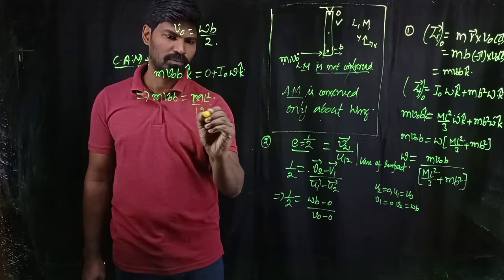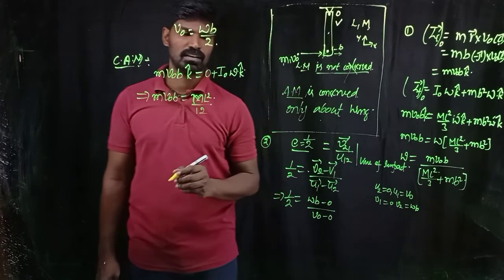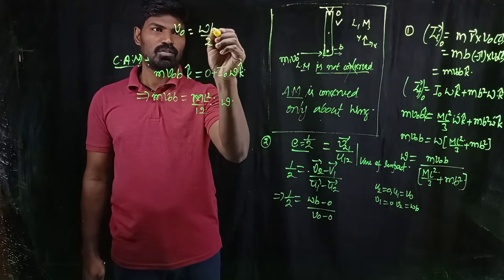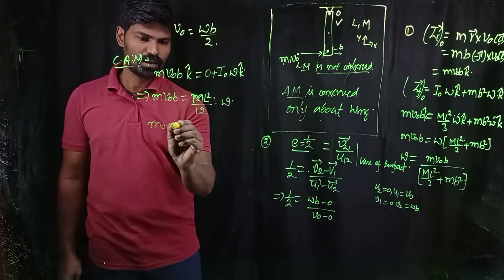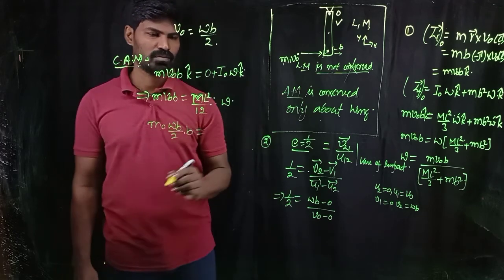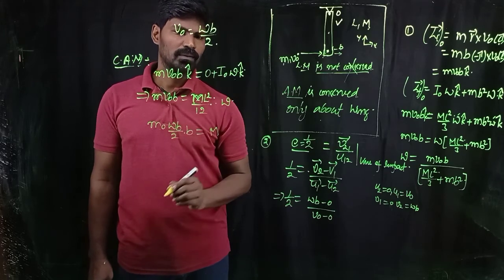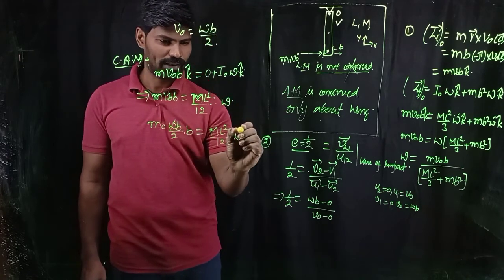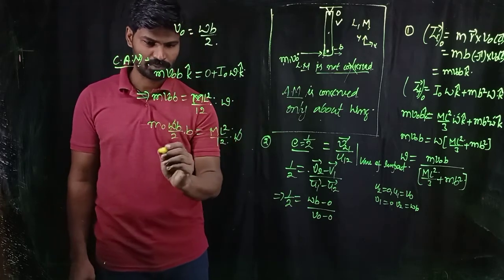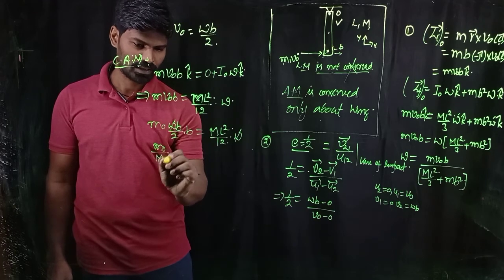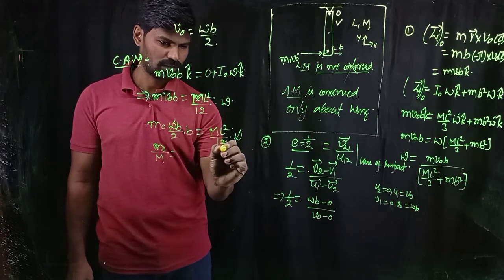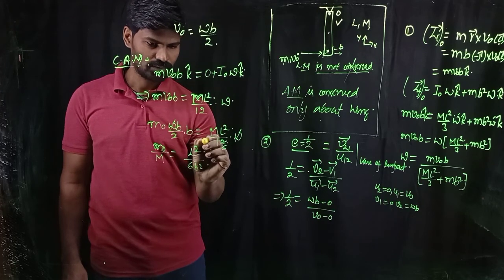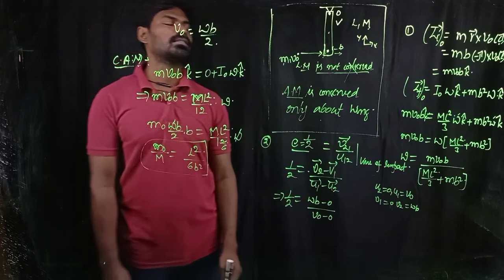The moment of inertia of the rod about its end is M·L²/3. Substituting V₀ = ω·B/2: m·(ω·B/2)·B = (M·L²/3)·ω. Cancelling ω from both sides: m·B²/2 = M·L²/3. Therefore, the relationship is: m/M = 2L²/(3B²), or equivalently M/m = L²/6B² depending on notation. This gives the required relationship between small m and capital M such that the ball comes to rest after collision.